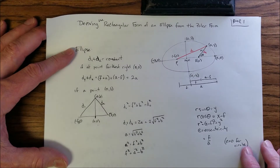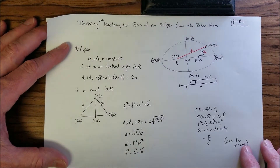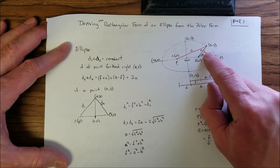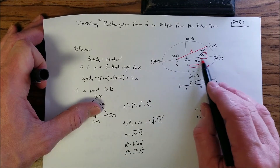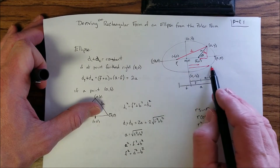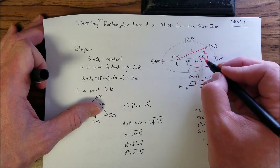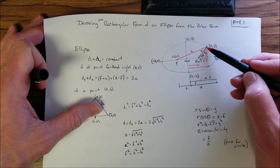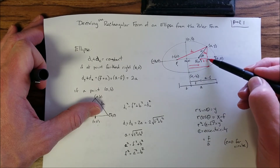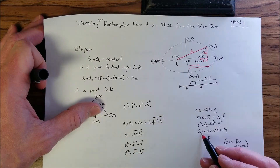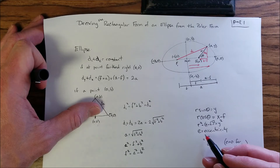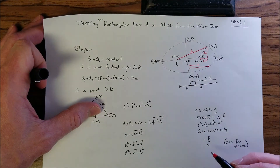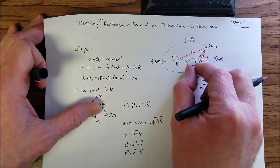A couple of additional definitions before the derivation: y equals r times sine of theta; r cosine theta equals x minus f; and by the Pythagorean theorem, r squared equals (x minus f) squared plus y squared. Ellipses also have an eccentricity, which is simply the ratio f over a.